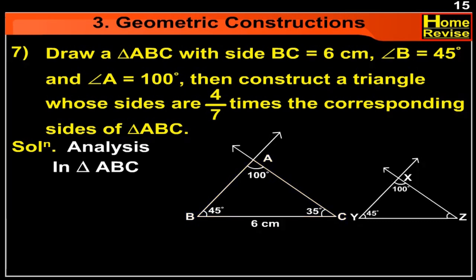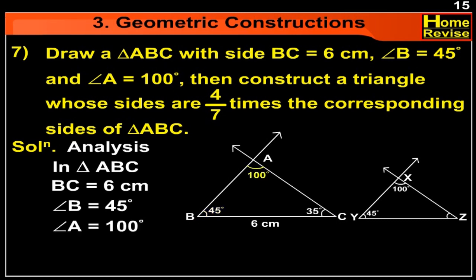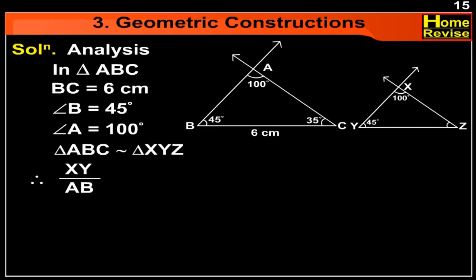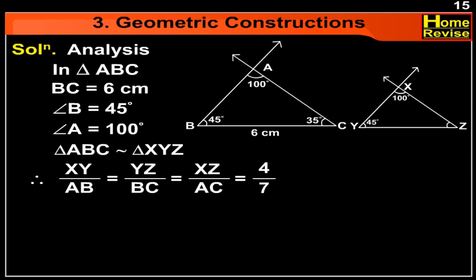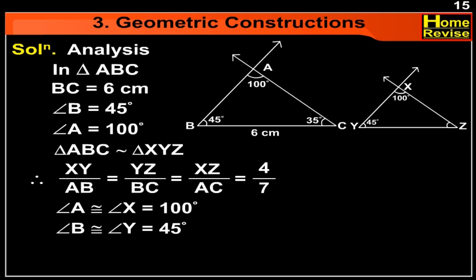In triangle ABC, BC is equal to 6 cm, angle B is equal to 45 degrees, and angle A is equal to 100 degrees. Also, triangle ABC is similar to triangle XYZ. Therefore, XY upon AB is equal to YZ upon BC is equal to XZ upon AC, which equals 4 upon 7. Angle A equals angle X, so angle X is equal to 100 degrees. Similarly, angle B equals angle Y, so angle Y is equal to 45 degrees. Therefore, angle C equals angle Z.